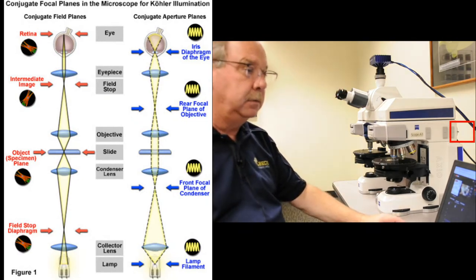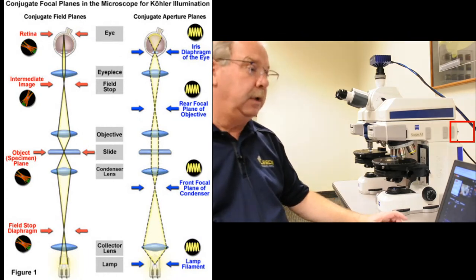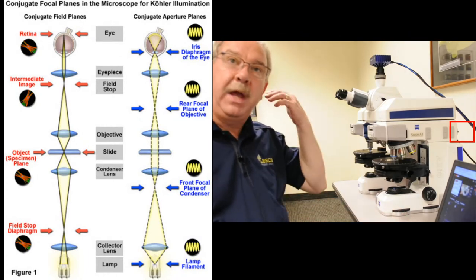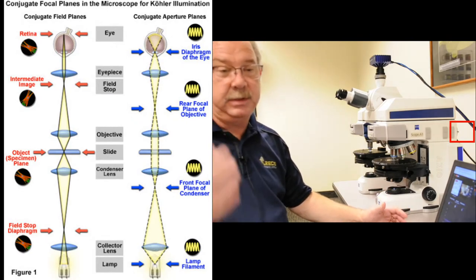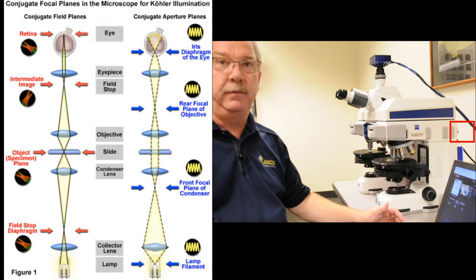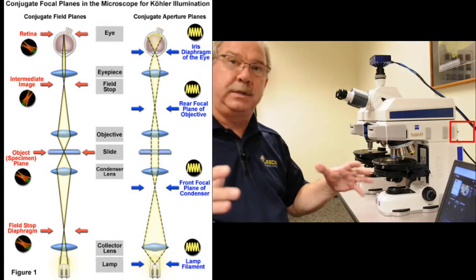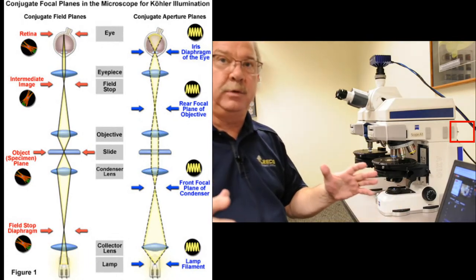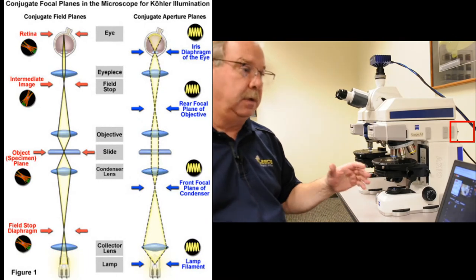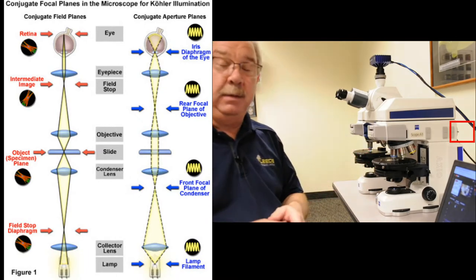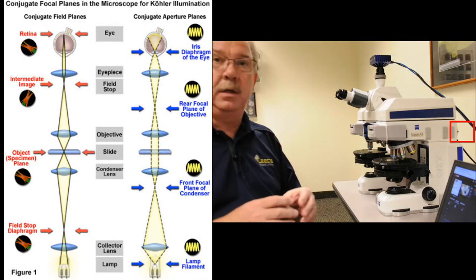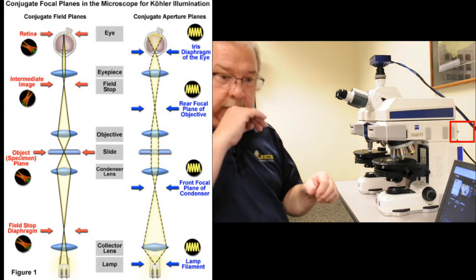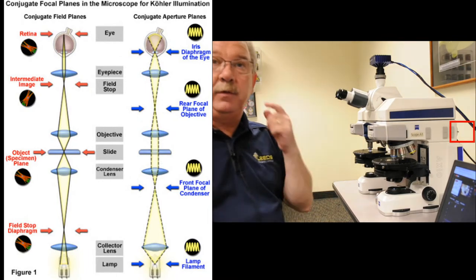You could actually measure the diameter of that reduced-diameter diaphragm, and it would correspond to the field of view of the eyepiece. In this case, we have a 23 millimeter field of view — the largest of any comparison microscope out there — and we could go in and measure that diaphragm and find it to be 23 millimeters in diameter. The final conjugate field plane is in the back of your eye, in the retina. I see the sample in focus, I see a nice sharp edge around my image, and if I were to close down the field diaphragm, I would see it in focus as well.